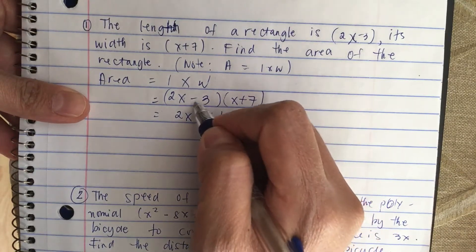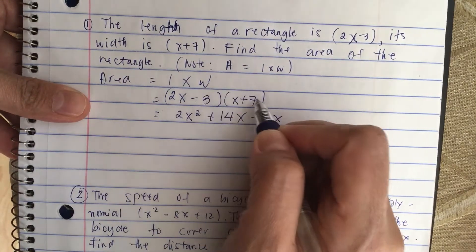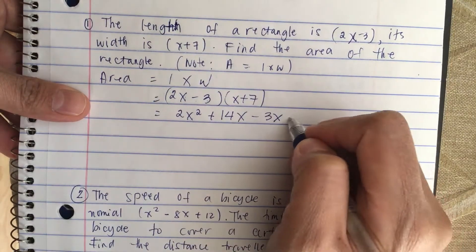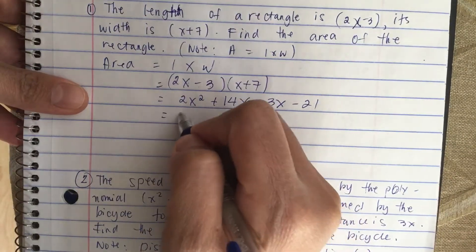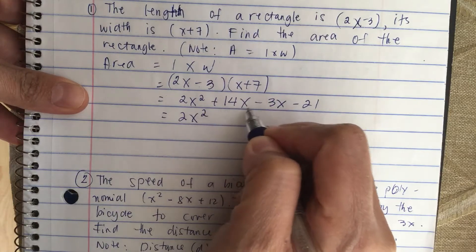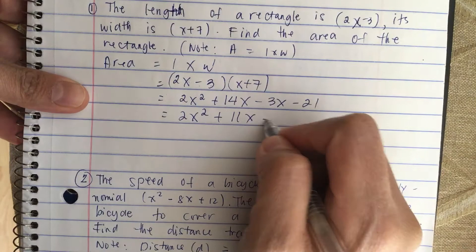Then the inside terms, minus 3 times x is minus 3x, and then the last term minus 3 times 7 is minus 21. So we combine like terms, we get 2x squared, 14 minus 3 is 11x.